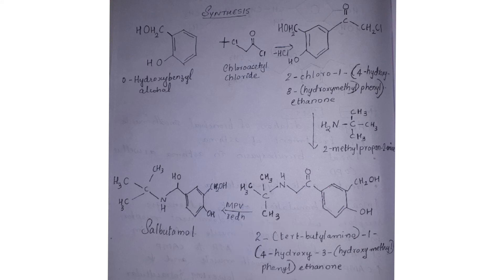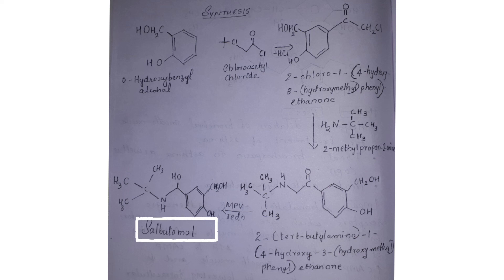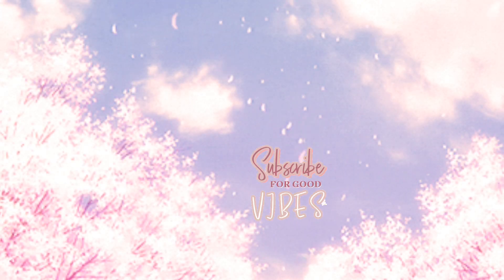Now, this compound undergoes MPV reduction. Due to reduction of the ketone group, it forms an alcohol and the resulting product is salbutamol. Looking at the previous structure, in the place of C=O, the ketone gets converted into alcohol, which is the process of MPV reduction. That is the synthesis of salbutamol, which is mainly used as a bronchodilator. Thank you.